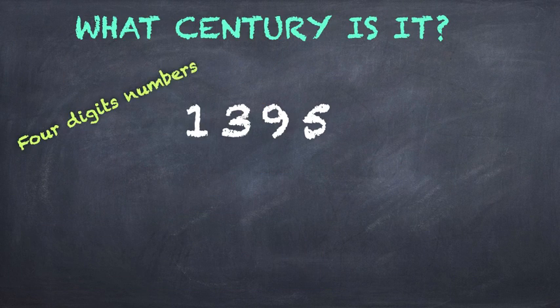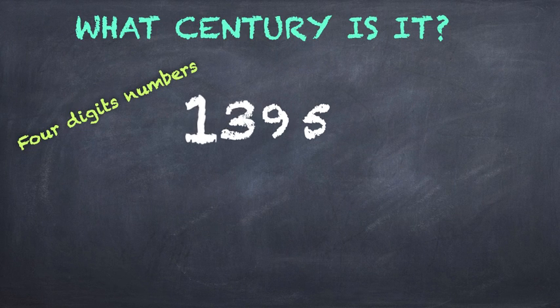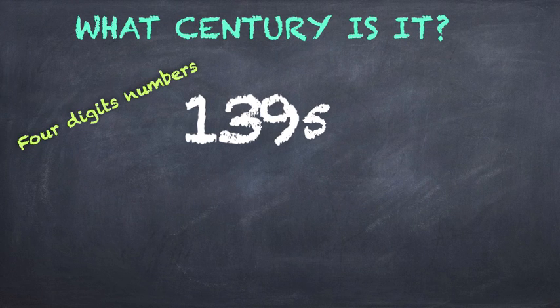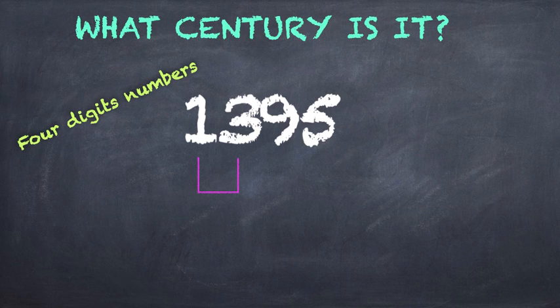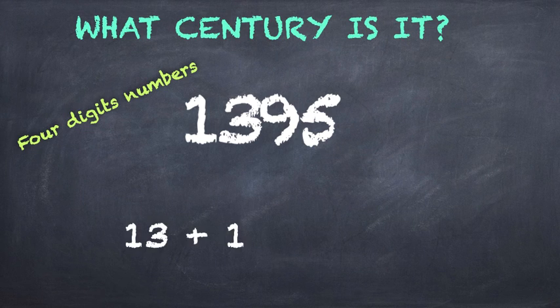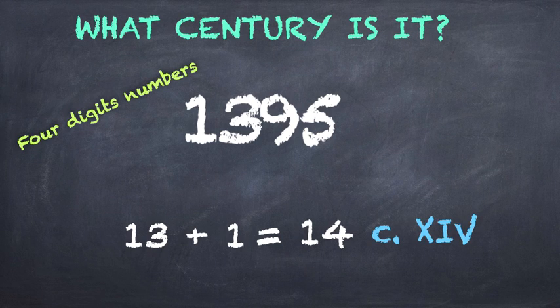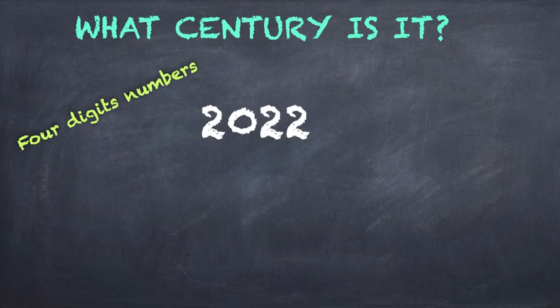Now we have a four-digit number. So with the year 1395, we have the thousand, the hundreds, the tens, the ones. But we need the two first figures. You know, the thousand and the hundred. And we add one. So 13 plus one. 13 plus one is 14. So the year 1395 will be the 14th century.